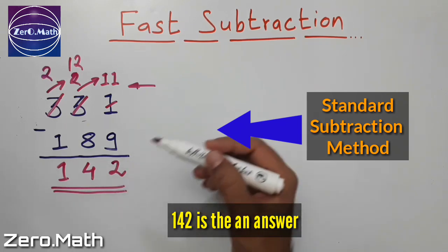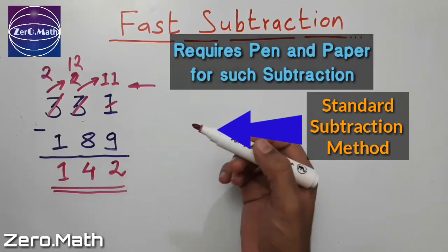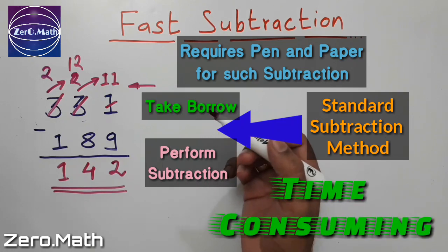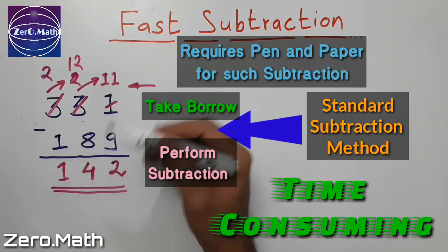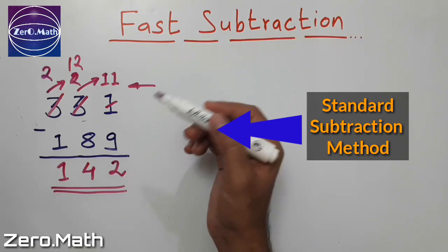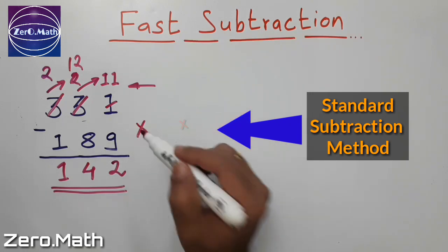However, this subtraction you cannot perform unless you have a pen and a paper, because you have to take a borrow from the next digit and perform a subtraction. When it comes to fast subtraction we don't recommend this method.